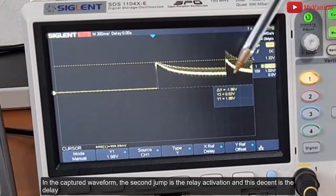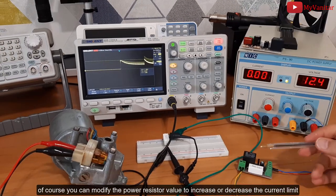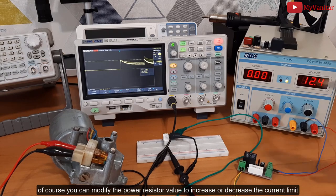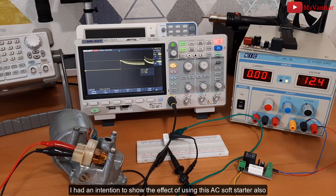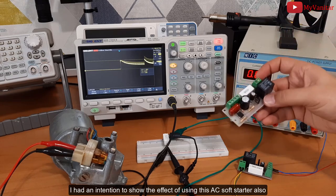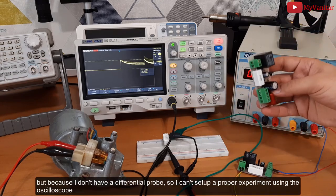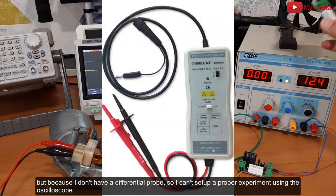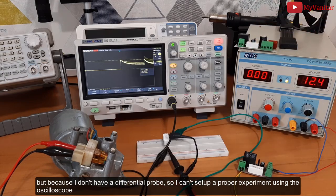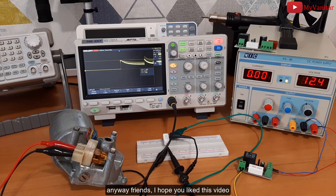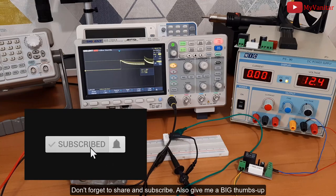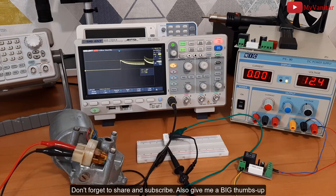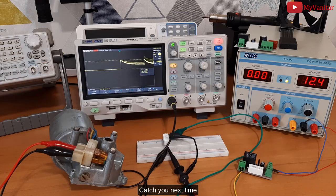this descent is the delay. Of course, you can modify the power resistor value to increase or decrease the current limit. I had an intention to show you the effect of using this AC soft starter also, but because I don't have a differential probe, I can't set up a proper experiment using the oscilloscope. Anyway friends, I hope you like this video. Don't forget to share and subscribe. Also give me a big thumbs up. Catch you next time!